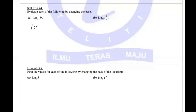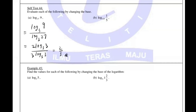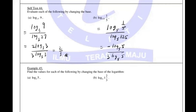The third one: change everything to base 3. 9 stays on top, 27 stays down. 9 is 3 to the power 2, and 27 is 3 to the power 3. When you cancel them, you get 2 over 3. For the next part, change to base 5. 1/5 is on top, 125 is below. 1/5 is 5 to the power negative 1, and 125 is 5 to the power 3. The answer is negative 1 over 3.